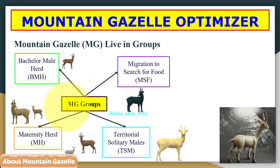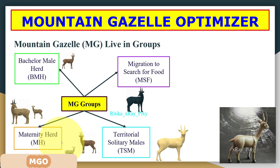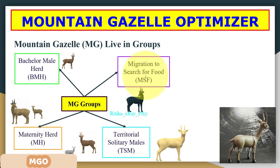The optimization is done using four key aspects of gazelle life. The optimization process is based on more than one factor: bachelor male herd, maternity herd, territorial solitary males, and migration to search for food.